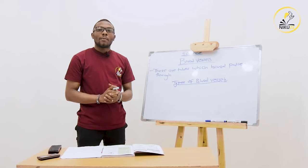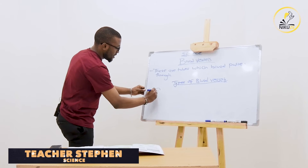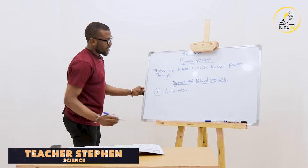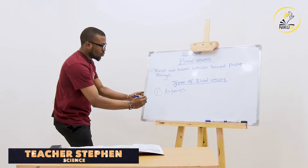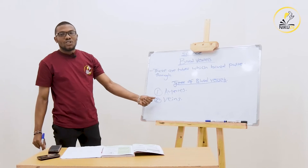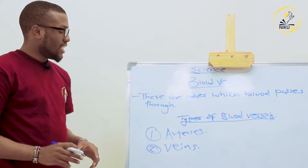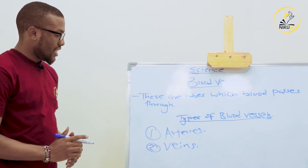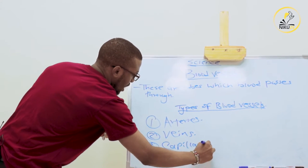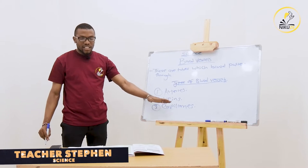These blood vessels are categorized into three parts. Number one we have the arteries - this is the largest blood vessel. Number two we have the veins - these are located on the surface of your body, not deep, that's why you can see them easily. Number three we have the capillaries - these are the connecting tissues that connect the arteries and the veins.